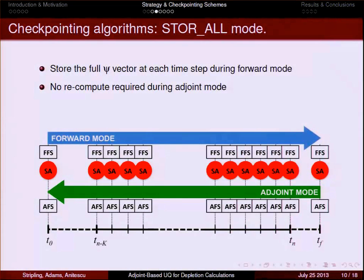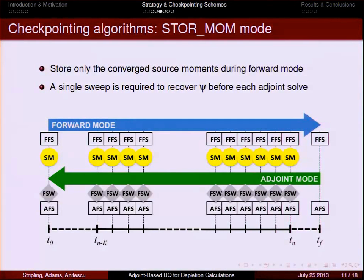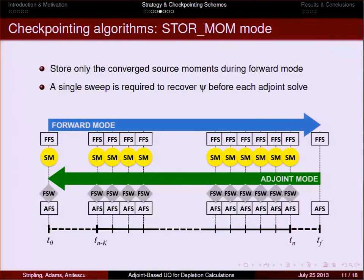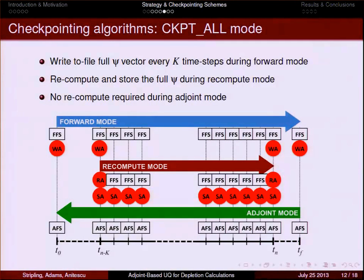The most naive checkpoint scheme simply stores everything as you march through the forward problem. In forward mode, at every time step we do a forward fixed source solve and save the full angular flux vector to RAM. Then we turn around and march backwards in adjoint mode; at each time step the forward solution is already in RAM, so we just do the adjoint fixed source solve. A simple adaptation is to instead store the source moments at each time step. The difference is that in adjoint mode, we must now perform a forward sweep before each adjoint fixed source solve to recover the forward solution — but the memory footprint of the stored moments is much smaller than that of the full angular flux vector.